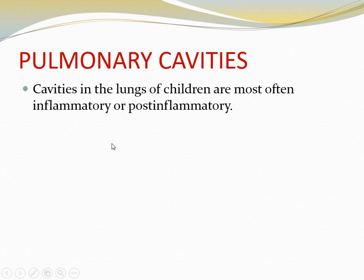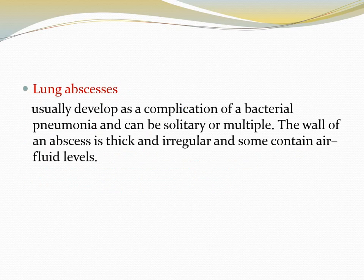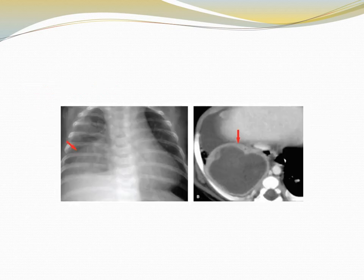Pulmonary cavities in the lungs of children are most often inflammatory or post-inflammatory. Causes include lung abscess, pneumatocele, congenital lung cyst, congenital pulmonary airway malformation, and congenital diaphragmatic hernia. Lung abscess usually develops as a complication of bacterial pneumonia and can be solitary or multiple. The wall of an abscess is thick and irregular and some contain an air-fluid level. On the PA radiograph it appears as a solid-like mass, and CT shows a thick wall containing hypo-intense fluid, indicating a pus-containing abscess.